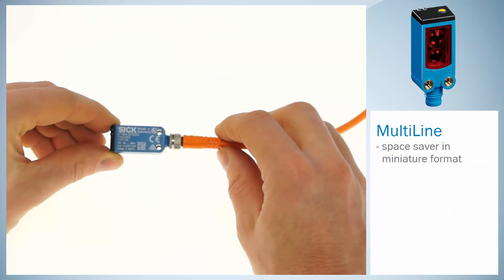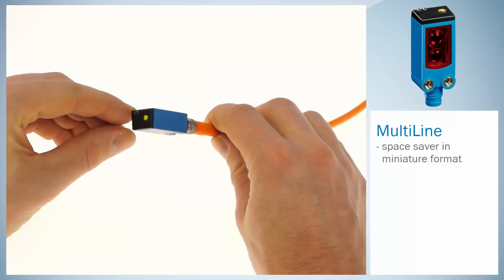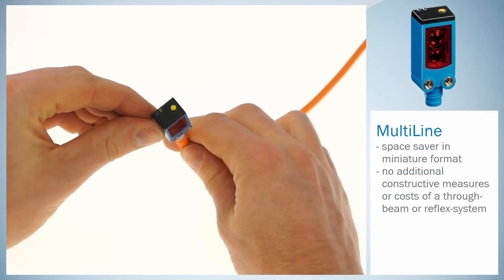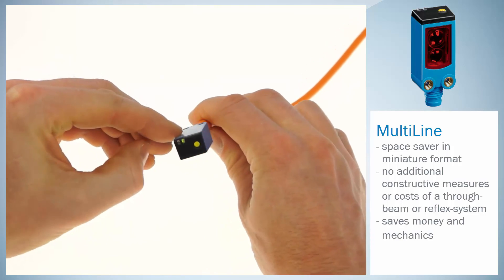Additionally, the multi-line sensor is a real space-saver in miniature form. Forget about the additional constructive measures or costs of a through-beam or reflex system. This saves money and mechanics.